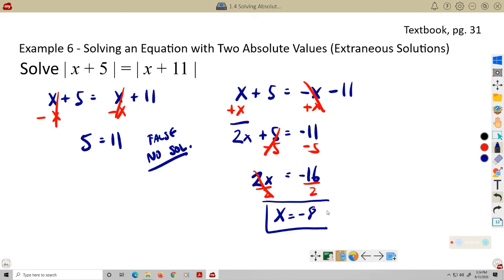So in this case, I only have one solution. You can just run it through your brain real quick by plugging it back into the original equation. Negative 8 plus 5 would be negative 3, so it's 3 on the left. Negative 8 plus 11 would be a positive 3. They both have an absolute value of 3. So this one does indeed check out. So only one solution here.